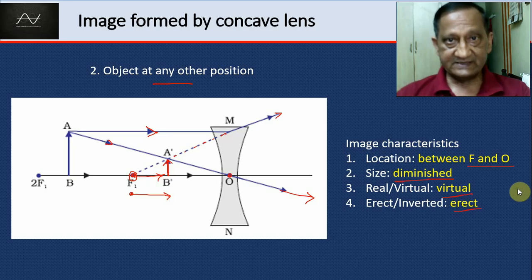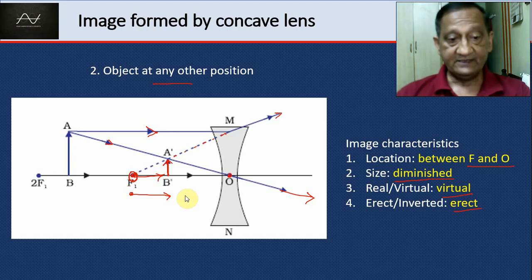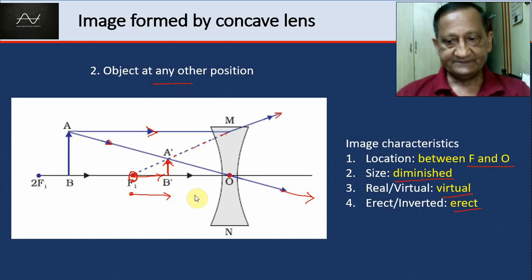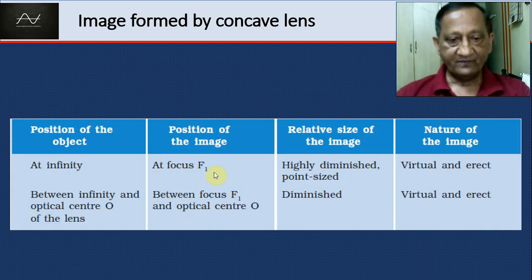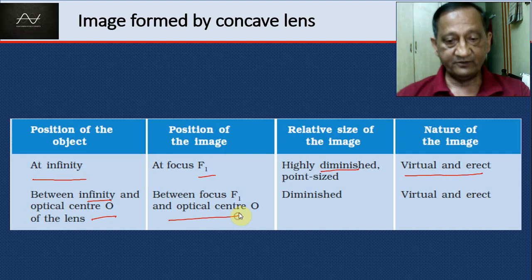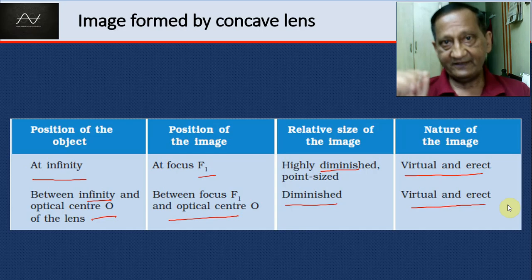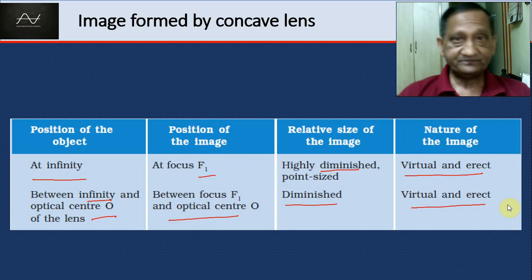For a concave lens, when the object is at infinity the image is at the focal point on the same side of the lens as the object — highly diminished, virtual, and erect. At any other position the image is between F and O, diminished, virtual, and erect. This means the concave lens never produces a magnified image and it is always virtual and erect.